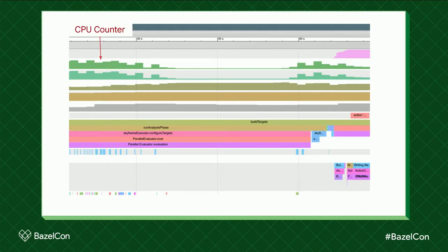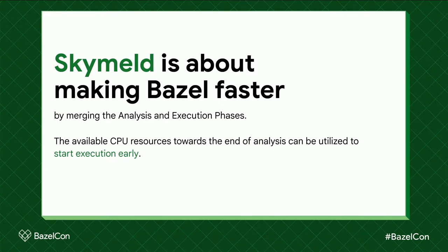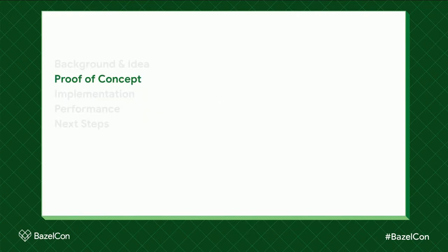Nothing — we just wait. And it's actually observable in one of the JSON profiles we have here. At the top left corner you have the CPU counter which tells you CPU utilization throughout the build. Right here you have the analysis phase, and if you look closely towards the end of analysis we basically have a lot of idle CPU resources — we're doing nothing with them. This is exactly how we can make Bazel faster: by merging the analysis and execution phases, using those idle CPU resources to start execution early.